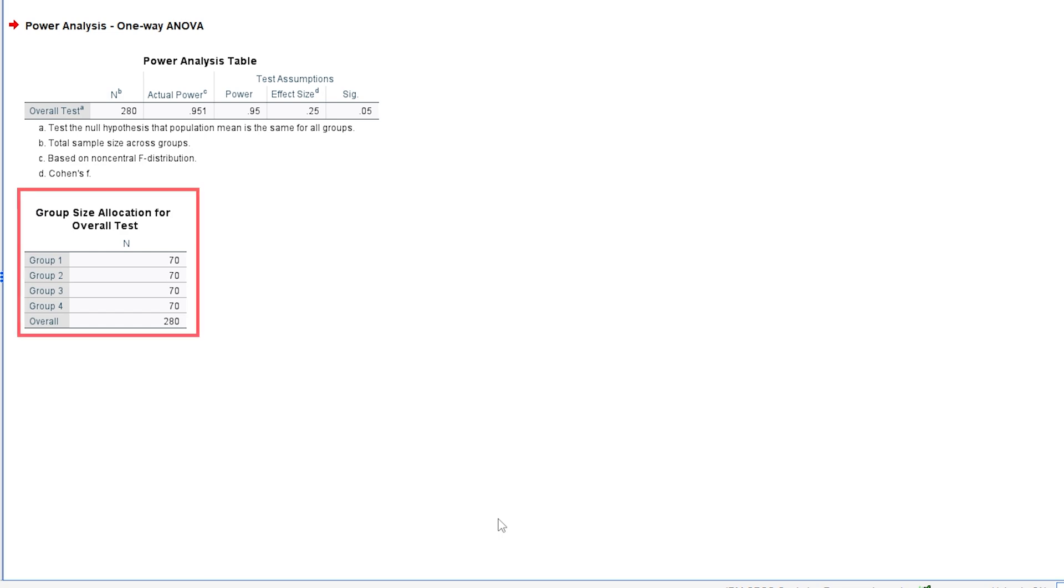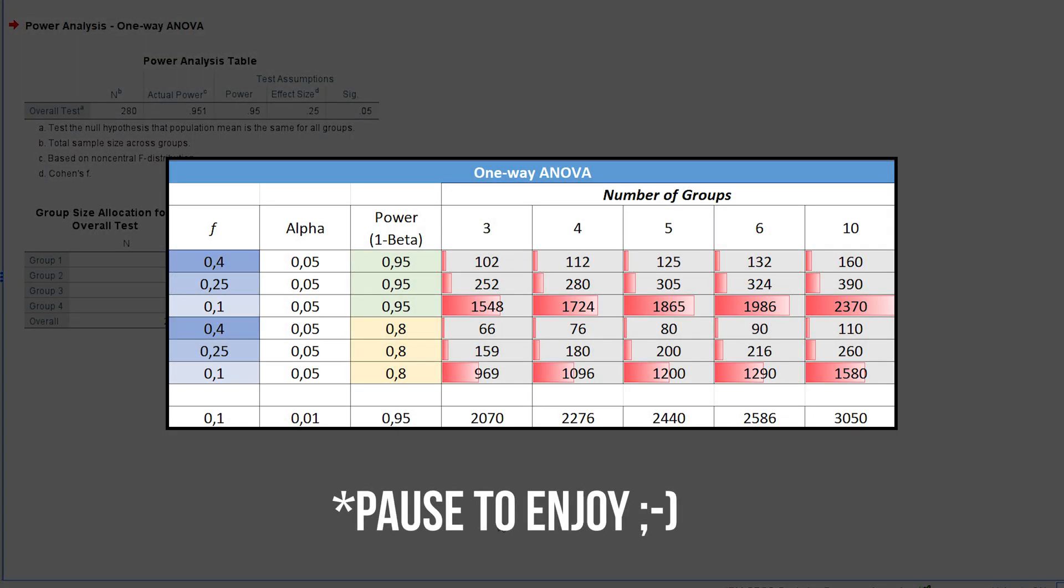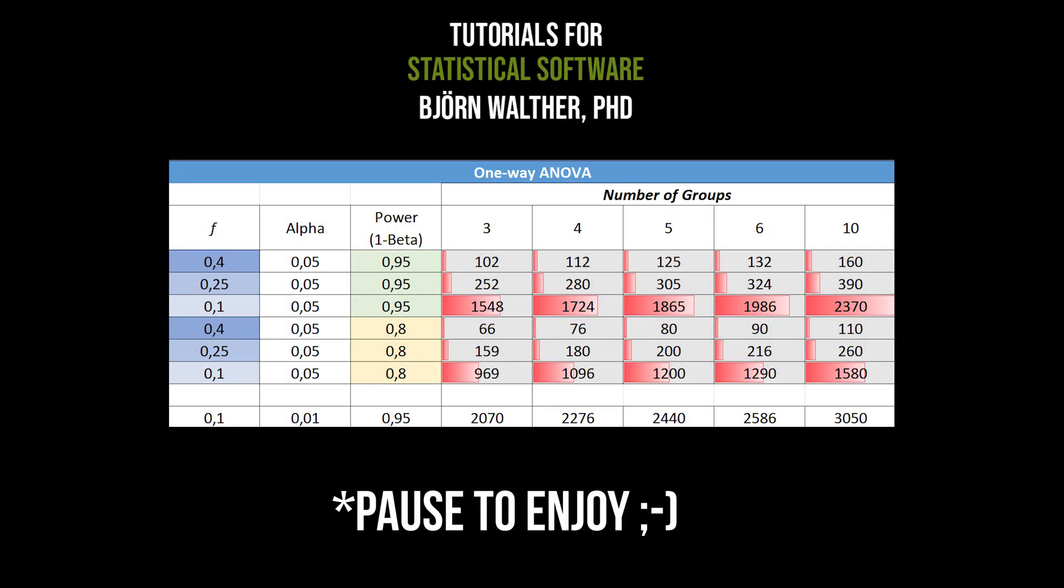Finally, hit OK to see the minimum number of observations needed to detect the presumed statistical effect with the predefined type 1 error probability and power. As a rule of thumb, a smaller effect size and a larger power require more observations than the other way around.